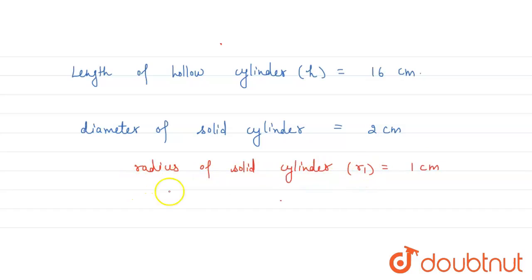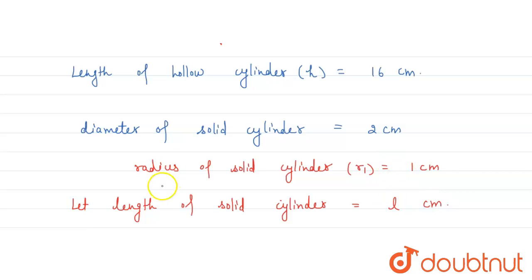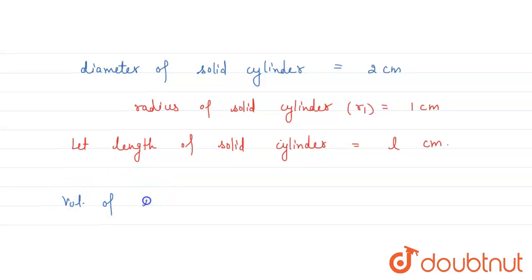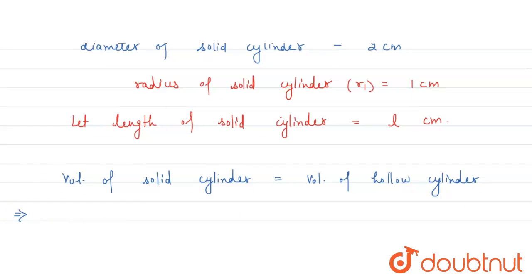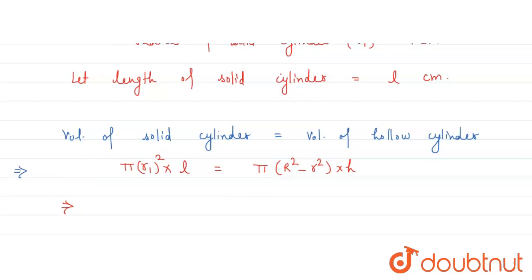R1 is equal to 1 centimeter. We have to find out the length of the solid cylinder. So length of solid cylinder is equal to L centimeters. Now, according to the question, volume of solid cylinder must be equal to volume of hollow cylinder.